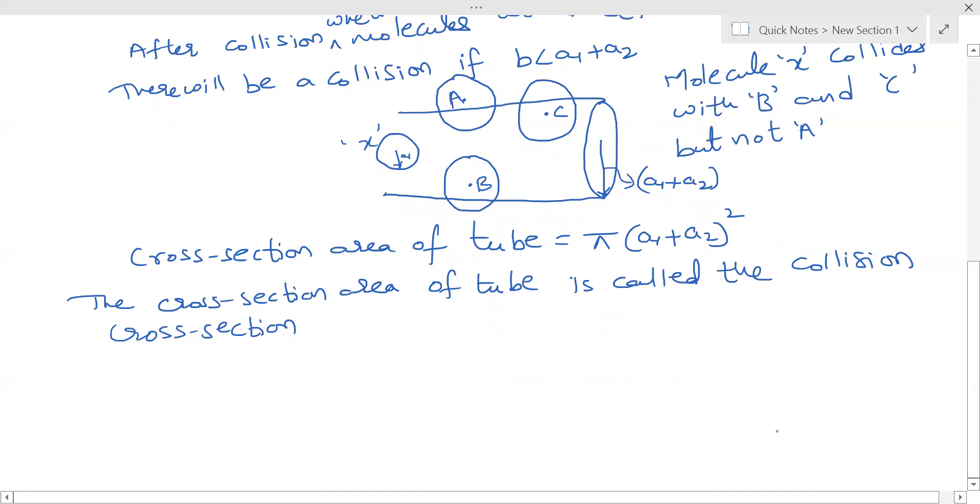Now if all the molecules are similar, suppose the gas is similar like helium gas for example, all the molecules will have equal radius. In that case, A1 equals A2 which equals A.